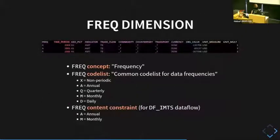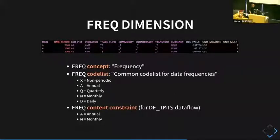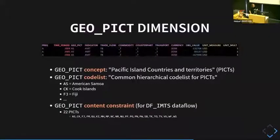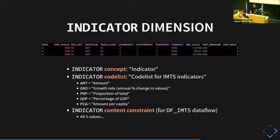Now I'll actually start going into what each of these columns means. The FREQ dimension has a concept called frequency; it has a code list called common code list for data frequencies, with translations like non-periodic, annual, quarterly, and so on. The data flow also has a content constraint saying that frequency only has two possible values in this data set: annual or monthly. GEO_PICT is another dimension — this is where we get into the spatial realm — it's a code list for Pacific Island countries and territories.